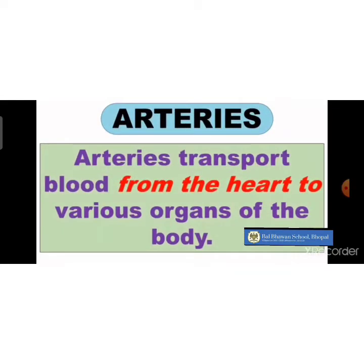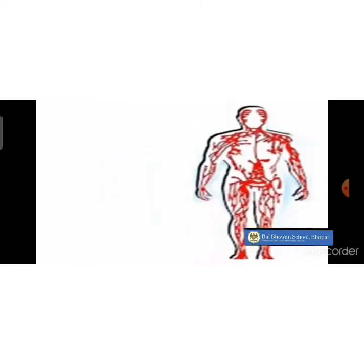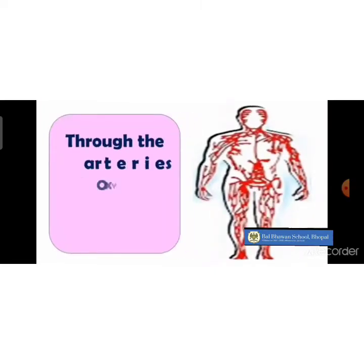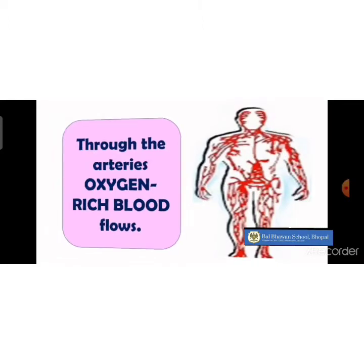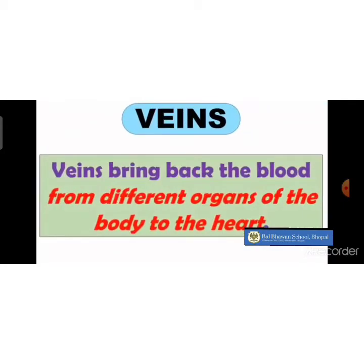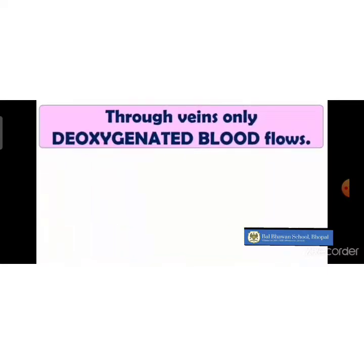Arteries transport blood from the heart to the various organs of the body. Through the arteries, oxygen-rich blood — or pure blood — flows from the heart to all the body organs. Veins bring back the blood from different organs of the body to the heart.